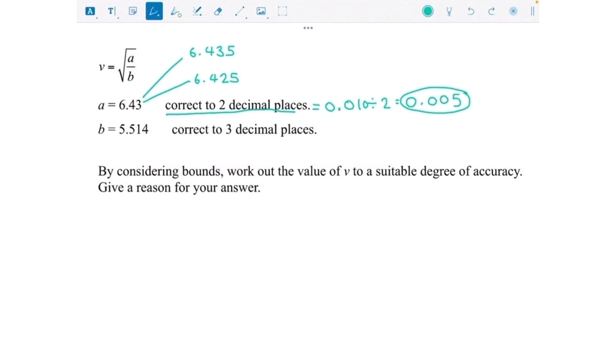For b, we're going to do exactly the same thing. This one's been rounded to the nearest 0.001 because it's three decimal places, and half of that is 0.0005. So 5.5145 above and 5.5135 below.